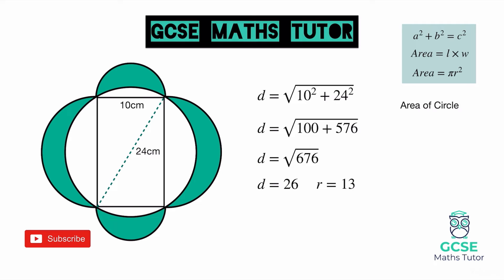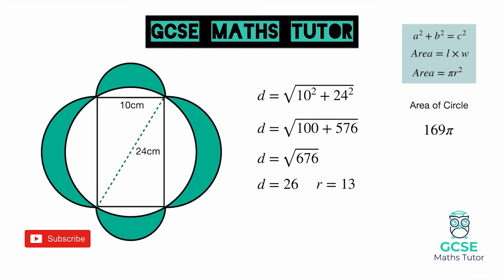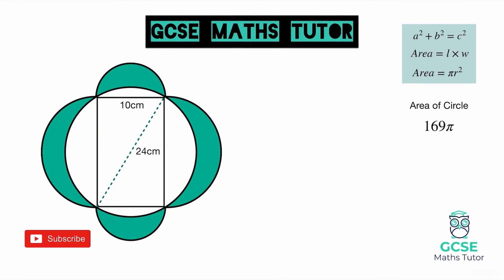Now we can work out the area of the circle: pi times radius squared, which is pi times 13 squared. 13 squared is 169, so the area of the circle is 169π. Moving on, the area of the rectangle is simply 10 times 24, which gives us 240.